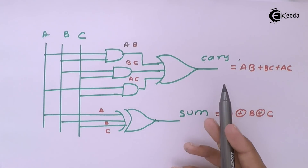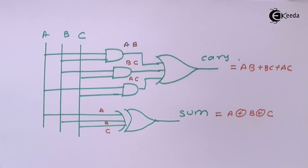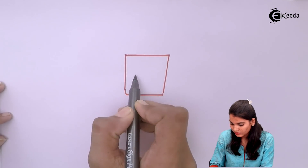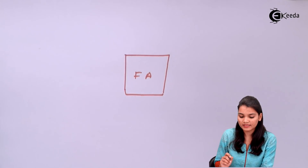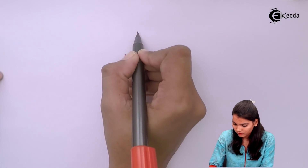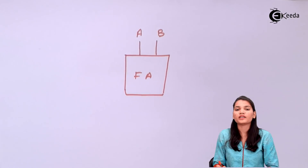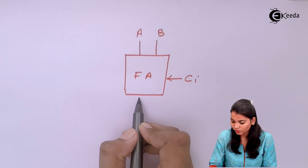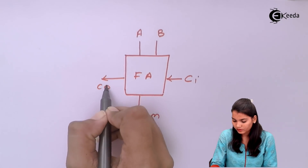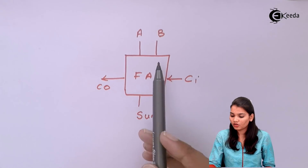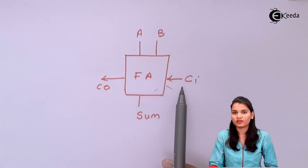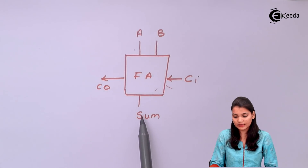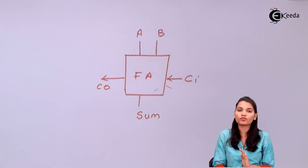Now how do we represent the full adder in circuit form? In the full adder circuit we have three inputs: A, B, and C. Here the third input C can be written as the carry input from the previous stage. The outputs are sum and carry out. A and B are the two data inputs, C is the carry input which is forwarded from the previous stage, and the carry output is forwarded to the next stage.